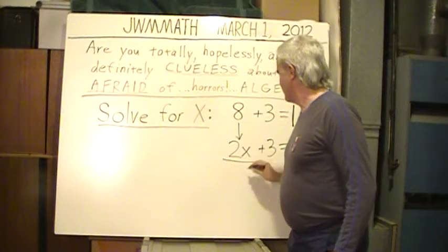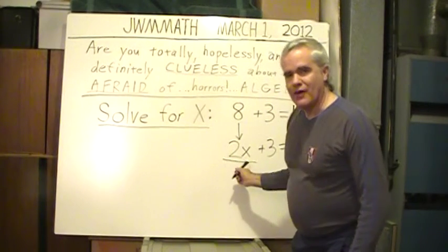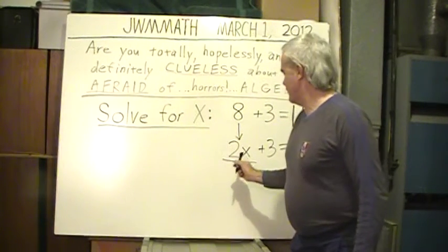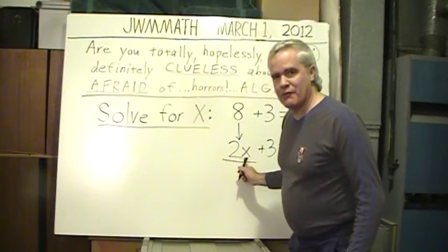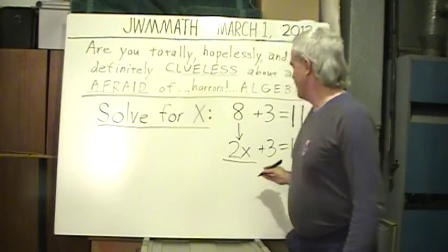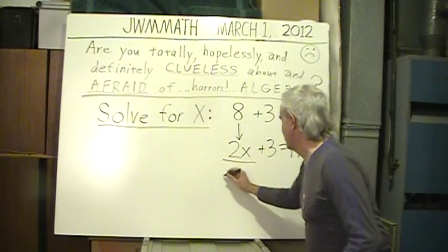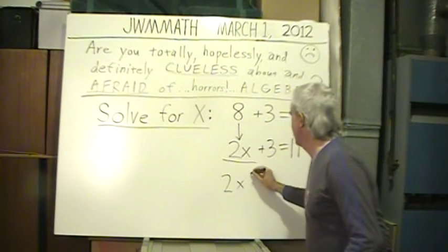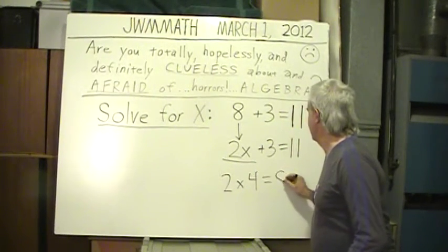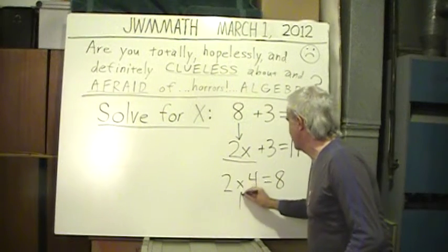So now, just a matter of what number, when you multiply by 2, gives 8? Or, 2 times what number equals 8? And from your times tables, you realize that's 4. 2 times 4 equals 8. Yeah, that's a times sign, not an x.